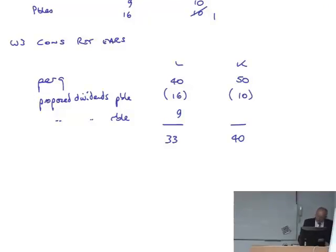But there aren't in this example. So the adjusted and therefore the retained earnings are now 33 and 40. And I need to take away the pre-acquisition. 30,000 for Christina.